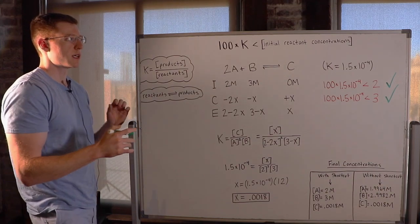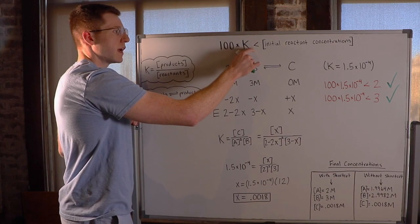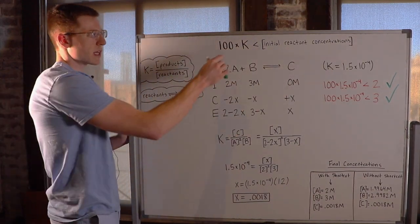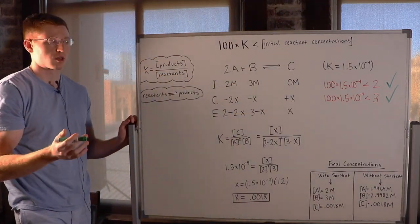So think about what this means. If we can multiply 100 times our K and it's still less than our initial reactant concentrations, we must have a pretty small K, at least relative to our initial reactant concentrations.